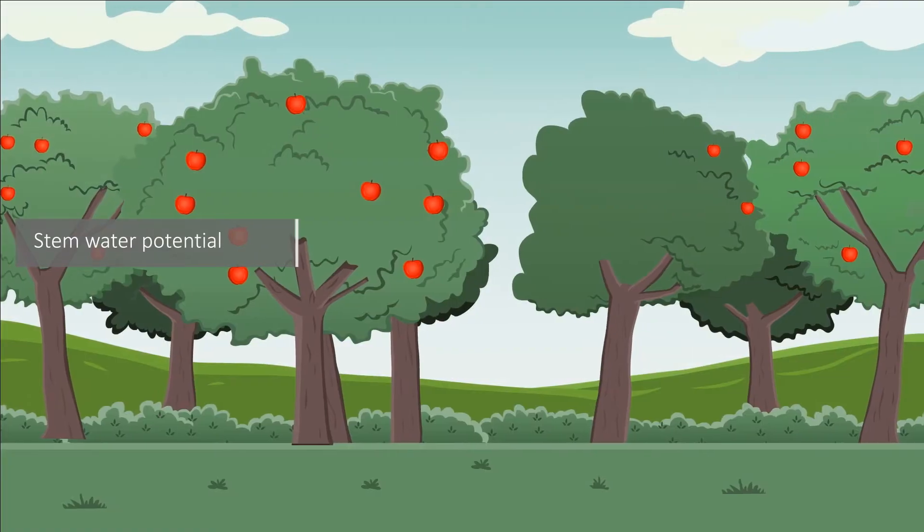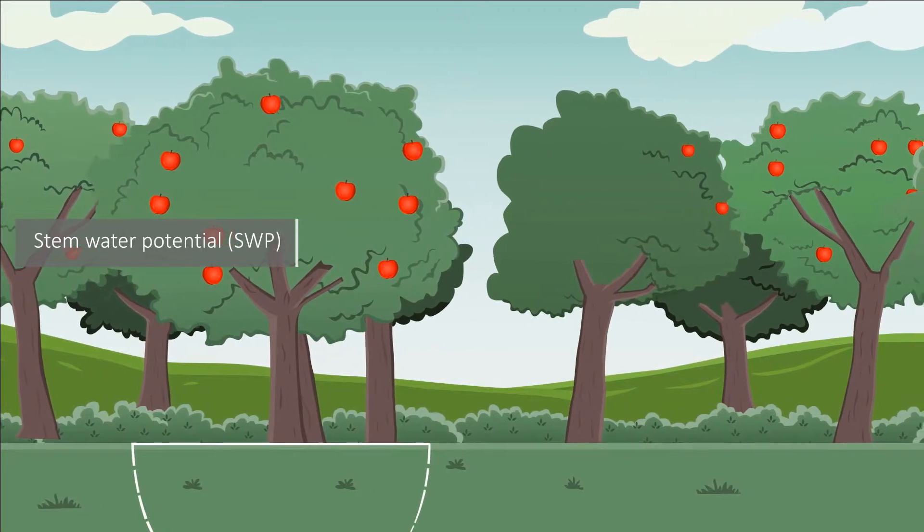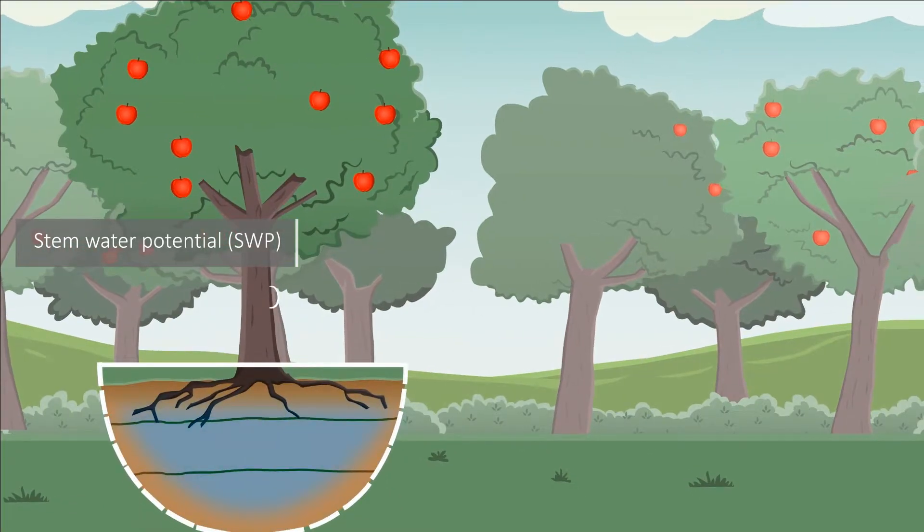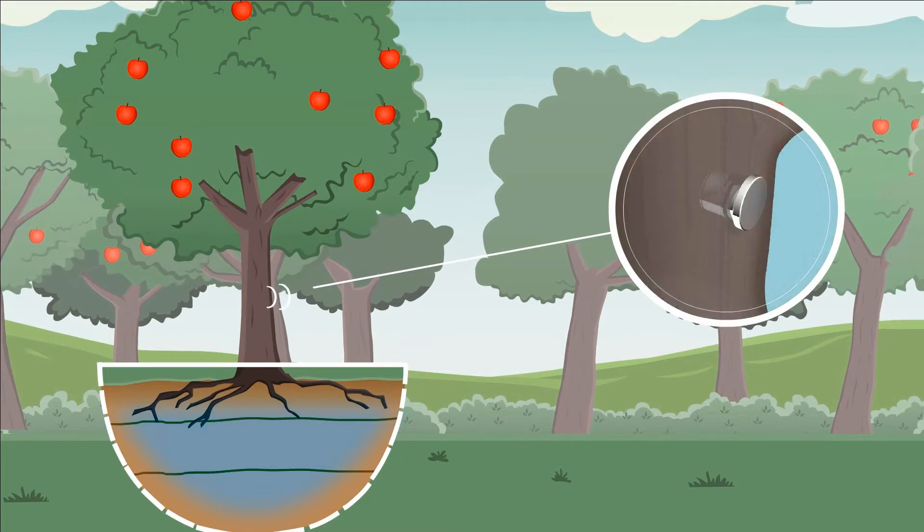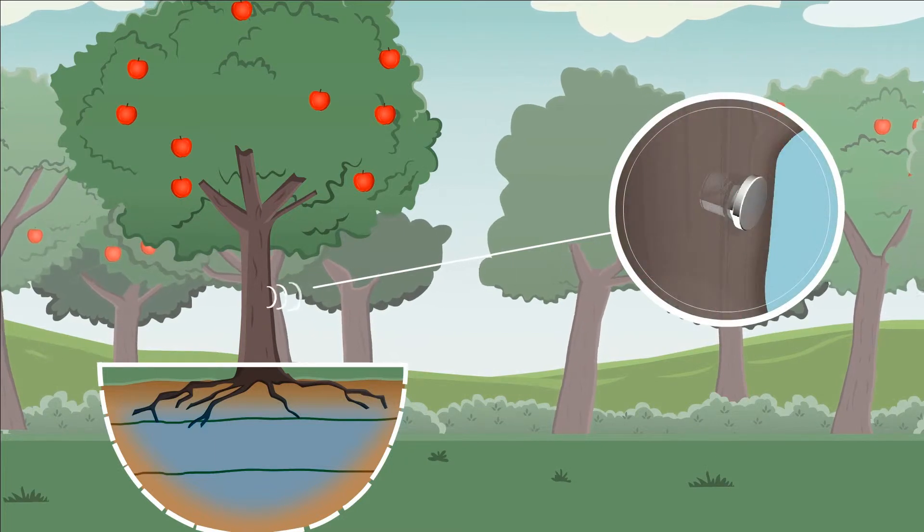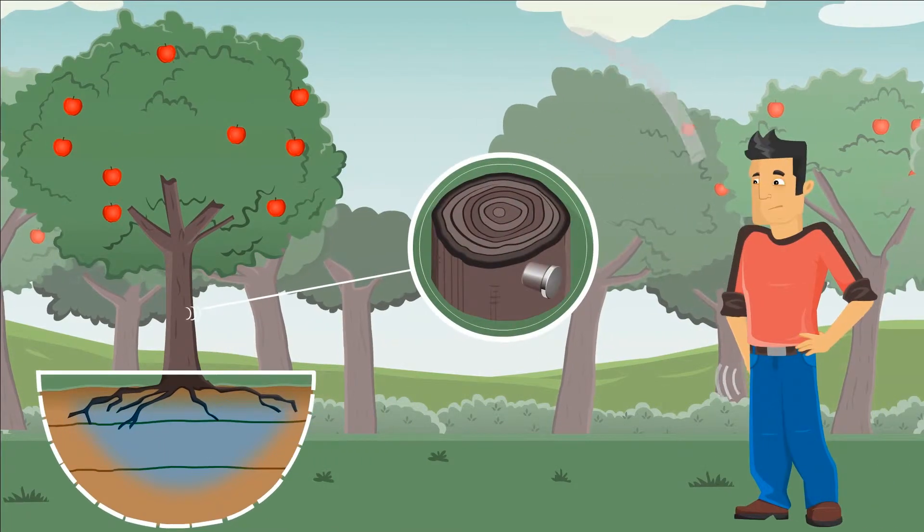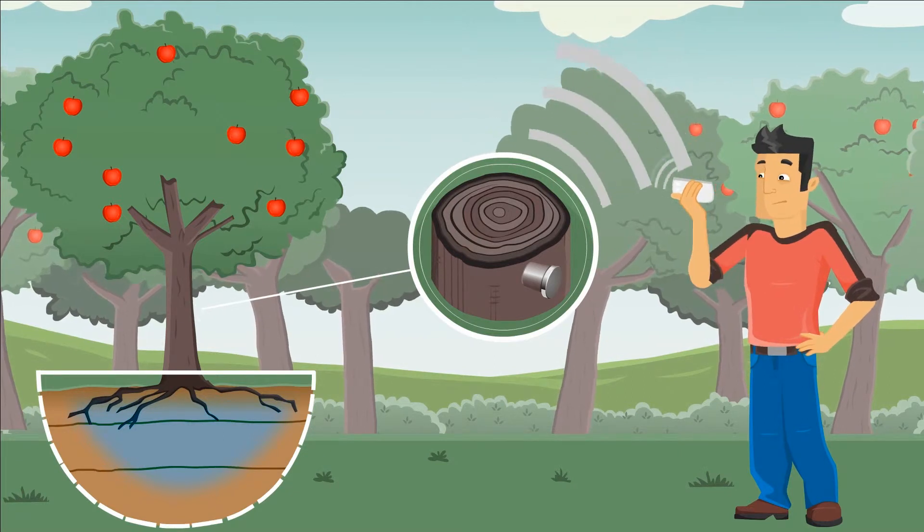The Saturas sensor accurately measures the stem water potential SWP in the trunk. SWP is the best-known direct physical indicator for water status in crops. For the first time, the tree can communicate with the farmer about the real water status in the trunk.